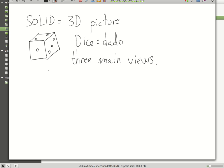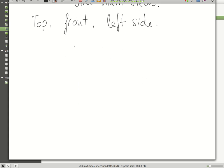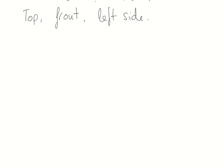The three main views of a solid are top, front, and left side. Let's take this picture drawn in the screen, as you can see. This is the number one, this is the number two, this is the number three of my dice.